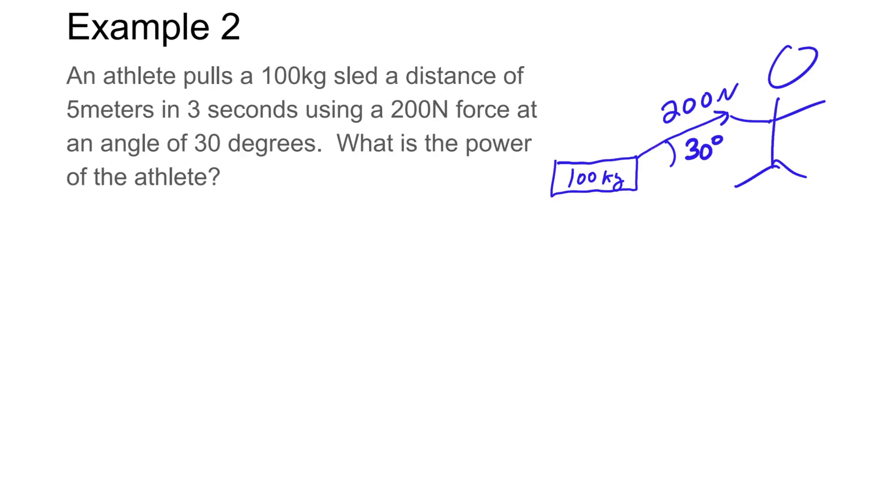Let's look at question number two. In this question we have an athlete who's going to be pulling a 100 kg sled. We're going to pull it a distance of five meters, and the time that they take is going to be three seconds. Sometimes you see these people in the gym pulling these big sleds. They're going to be pulling five meters in three seconds. We want to know the power of that athlete.